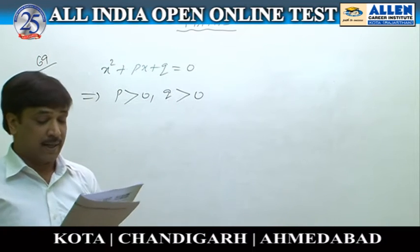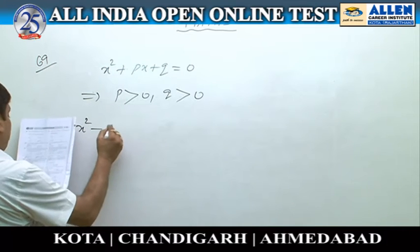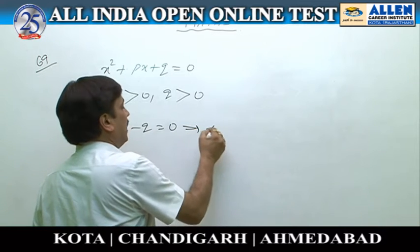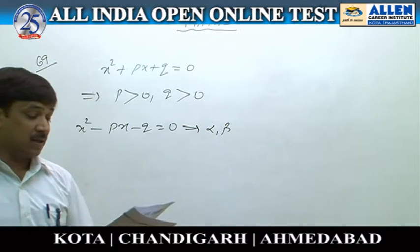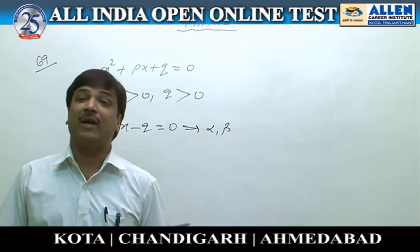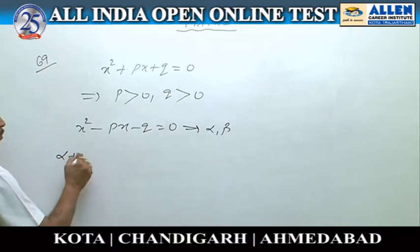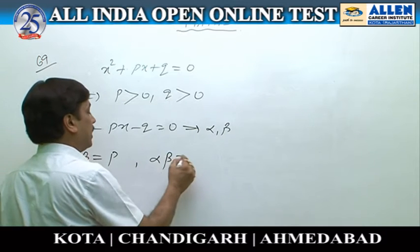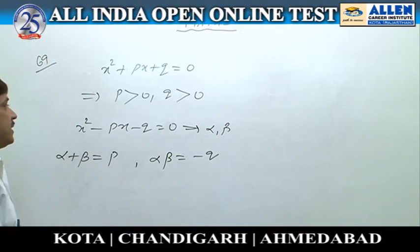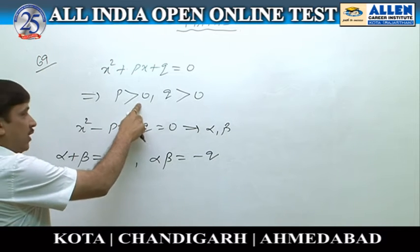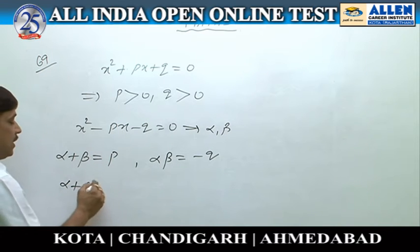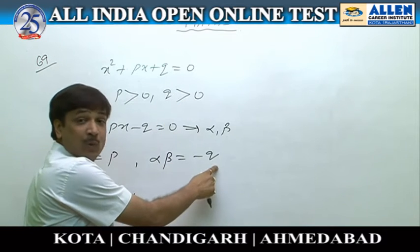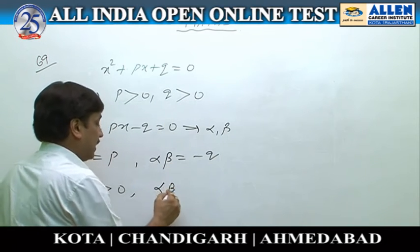The roots of this equation are alpha and beta. If we find the sum of roots, alpha plus beta equals -p, and the product of roots, alpha times beta equals q. We have already seen that p is positive. If p is positive, alpha plus beta is negative. q is also positive, but alpha times beta is -q, so alpha times beta is less than 0.